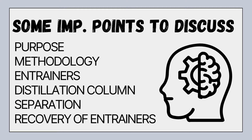Entrainers are carefully chosen based on their ability to form an azeotrope with one of the components and their ease of separation from the desired product. Common entrainers include benzene, toluene, xylene, and many more. Azeotropic distillation is conducted in a distillation column, which may consist of several trays or packing — it can be either a tray column or a packed column distillation.